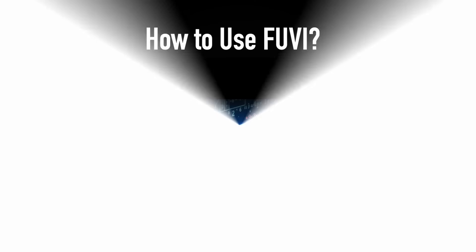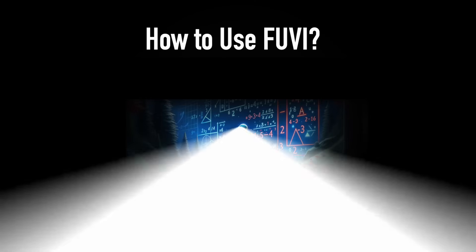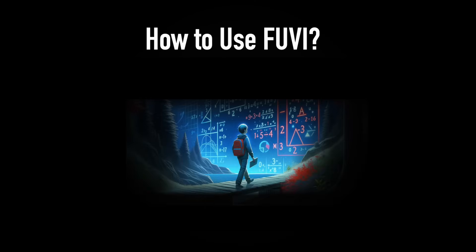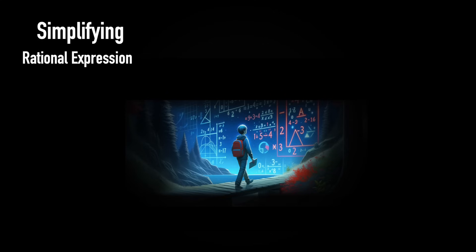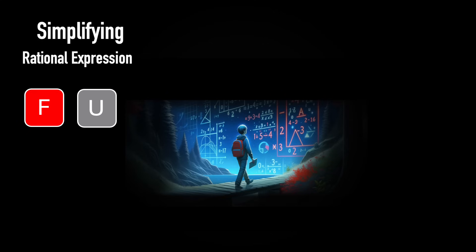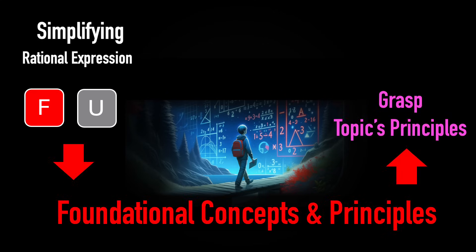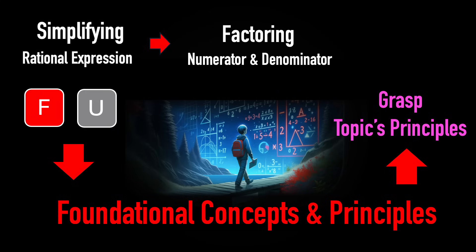How to use FUVI. Take this topic as an example: simplifying rational expressions. First, use the F and U buttons to quickly grasp the topic's principles — factoring the numerator and denominator, then canceling the greatest common factor.